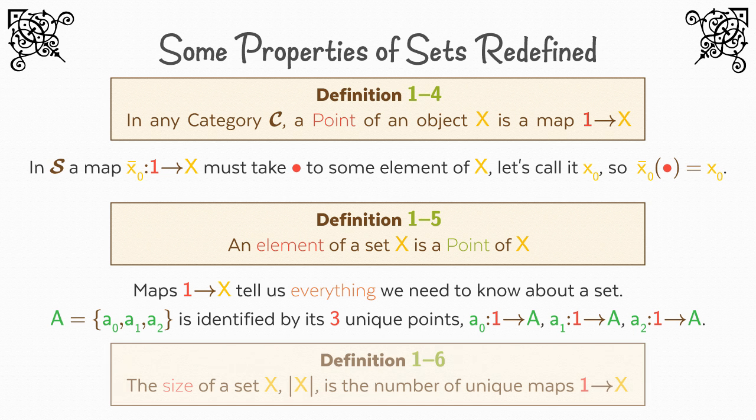Now we can give a formal notion of the size of a set. Definition 1-6: The size of a set X is represented by the number of unique maps 1 to X. The full benefit of these definitions will become clear in lesson 2, as we begin to explore more universal mapping properties and discuss the types of maps. But let's use them right now to prove a couple concepts we've been using from the beginning.